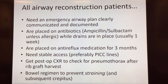We prefer PICC lines — peripheral IV lines that are placed in the pediatric ICU post-operatively. If those aren't available, central lines or whatever your institution prefers. All patients should get a post-operative chest x-ray to check for a pneumothorax after a rib graft harvest, if they had one. We find chest x-rays to be helpful for placement of tubes and checking to make sure everything's in the right spot.